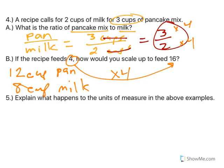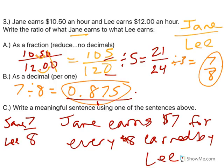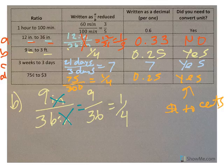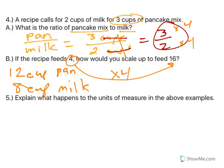And then number five. Explain what happens to the unit of measure. Well, you'll notice that they all canceled out. Because we were dealing with the same thing. Cups. When you went back, all of these, since we had the same top and bottom, they canceled out. So we just had a nice, easy ratio.